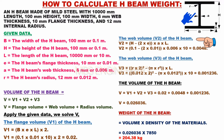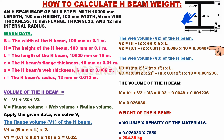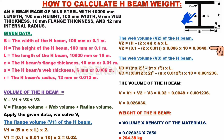Next, we calculate the web volume V2. V2 = (H − 2A) × A × L = (0.1 − 2 × 0.01) × 0.006 × 10 = 0.0048 cubic meters. The web volume of the H-beam V2 is 0.0048 cubic meters.